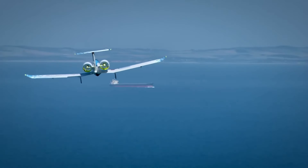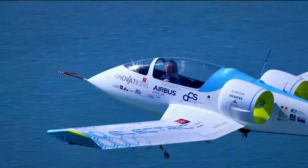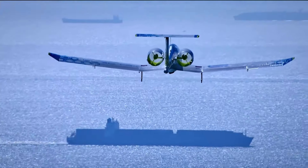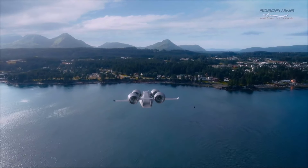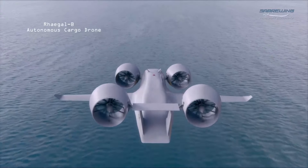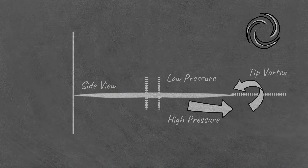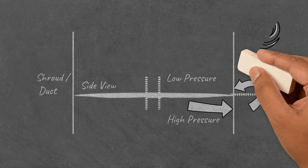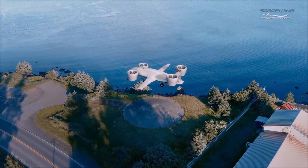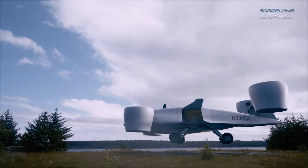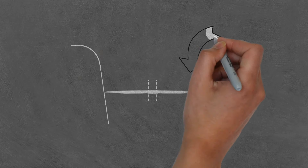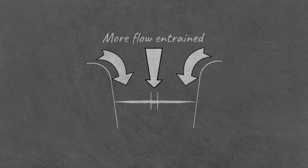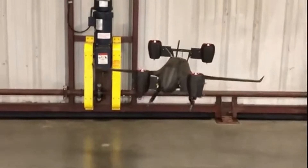Ducted propellers provide much higher thrust per watt of power spent. Compared to a baseline open rotor, a shrouded or ducted rotor can increase thrust by up to 94% for the same power consumption, or reduce power by up to 62% for the same thrust level. This superior performance comes from two phenomena: first, eliminating tip vortices — the shroud prevents low and high pressure zones from merging, improving thrust by up to 15%. The bulk of improvement comes from the duct acting as a venturi tube, where an annular lip entrains and accelerates more fluid, producing much higher thrust.